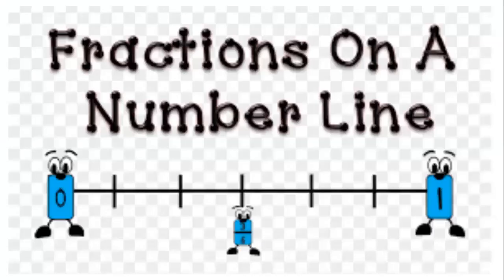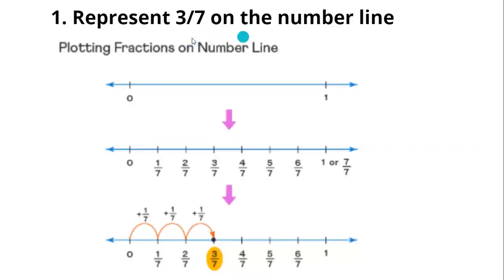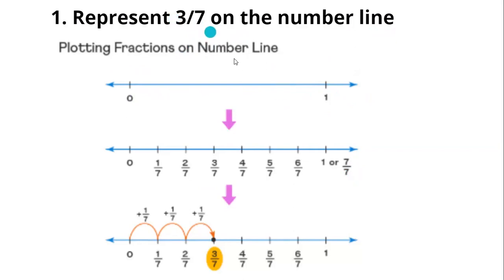How to represent fractions on a number line? Represent 3/7 on the number line. First we take a whole number from 0 to 1. Since we are representing 3/7, the denominator is 7, so 1 can be represented as 7/7 and 0 can be written as 0/7.